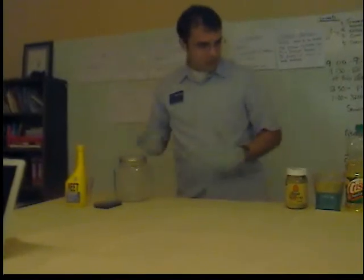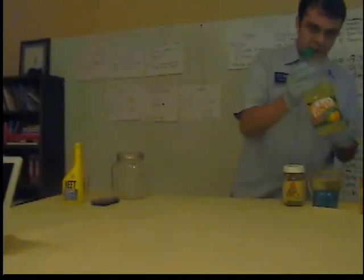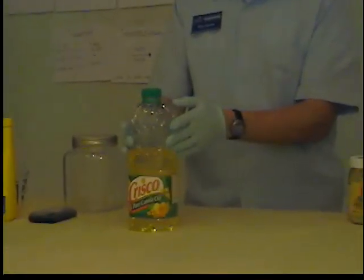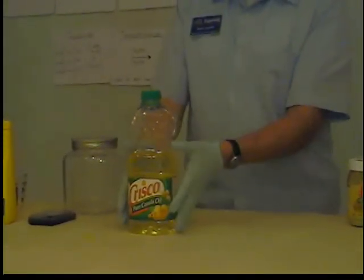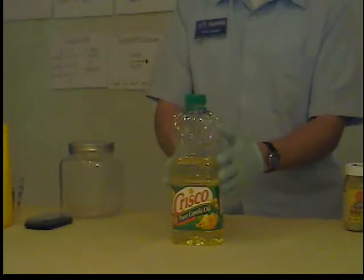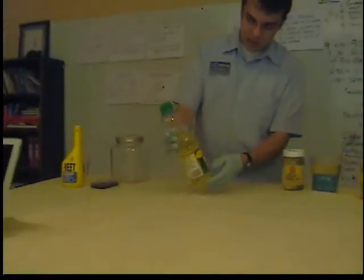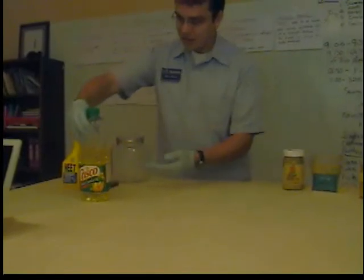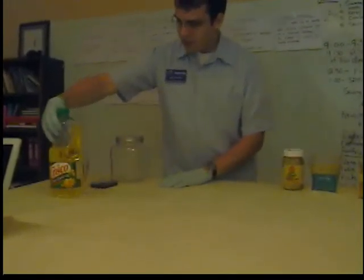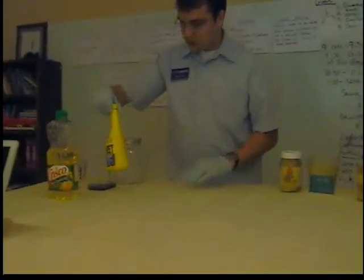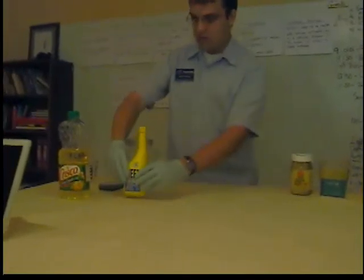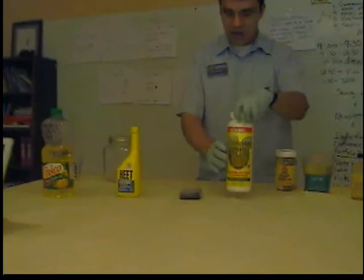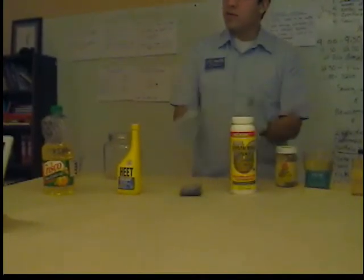The first thing we're going to do is take our oil. This oil has been preheated to a little bit over 100 degrees Fahrenheit, so it's fairly warm. This is exactly a liter of vegetable oil — Crisco canola oil in this case. What we need to do is measure out the amount of methanol and the amount of lye that we need, and we want to be very careful when doing both of these things.